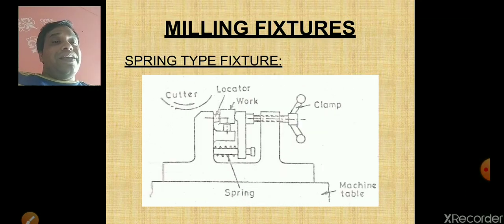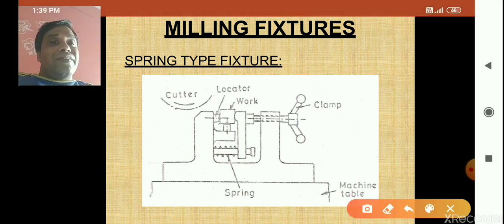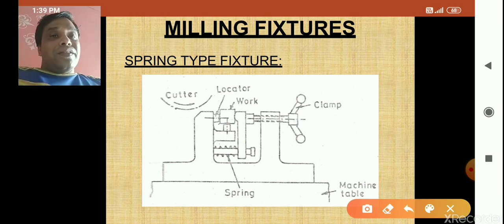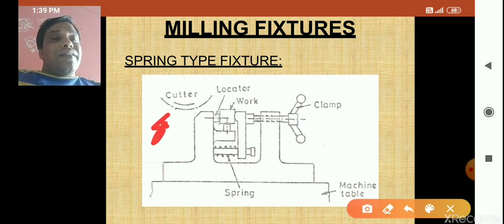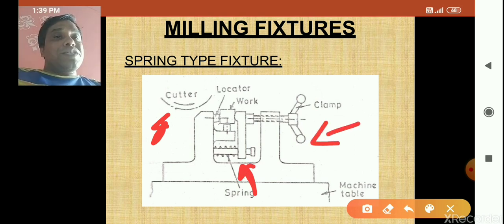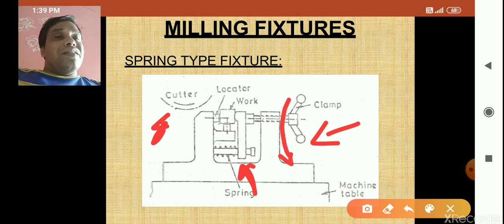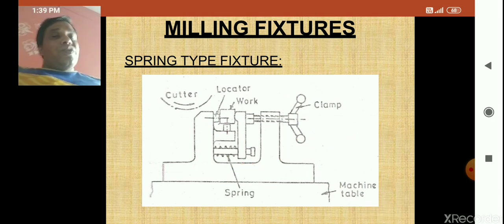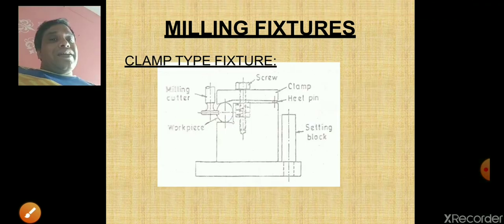In the spring type fixture, you can see the location of the cutter, the spring, and the clamp. Because of this spring, it is called a spring type fixture. As you loosen the clamp, unloading of the workpiece happens because of the spring releasing.